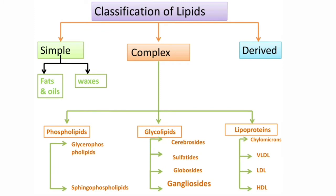Let us see the carbohydrate classification. Carbohydrates are classified based on the number of sugar units. Same way, if we classify the lipids, these are classified based on composition. We classify the lipids into three types: simple, complex, and derived.